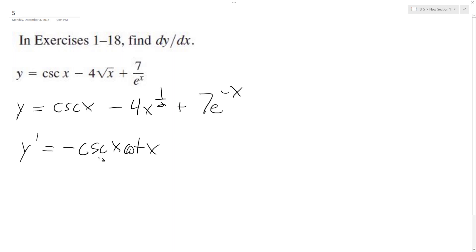Actually, I should rewrite it like this. Sorry, before I do anything else: d/dx of csc x minus 4 d/dx of x raised to the one-half plus 7 d/dx of e raised to the negative x.